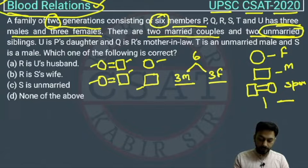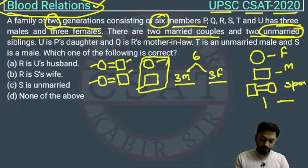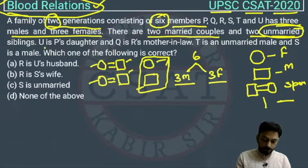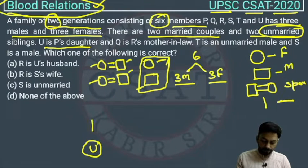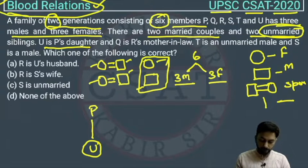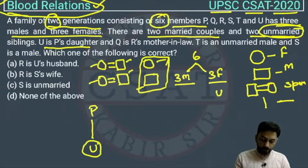So these are unmarried siblings. Now, U is P's daughter. We know the gender of U — she is female, since the question says 'daughter' — but we don't know the gender of P yet. So in the female section we can write U.